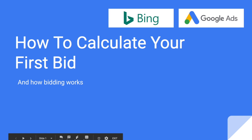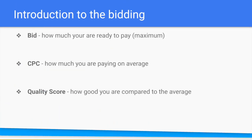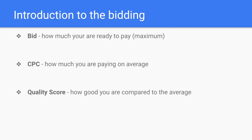Hi everybody. My name is Roman and today we're going to calculate our first bid in Google Ads. I'm going to talk about how bids work inside Google Ads and Bing, what you have to know, what a quality score is, and I'm going to propose one of the first methods to calculate your first bid. It's not the most accurate one, but it's the best one if you have no experience in Google Ads and want to know how it actually works. Let's start with an introduction to some key terms in Google Ads.